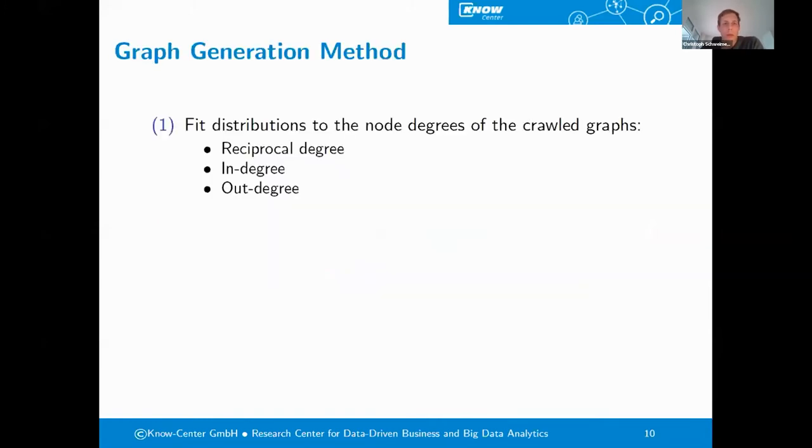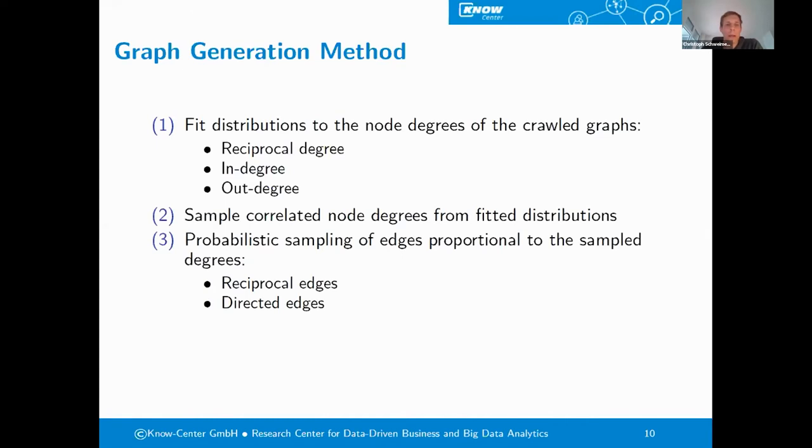Next, I want to go a little bit more into the details of the graph generation approach. We have split it up into four different steps. In the first step, we are fitting distributions to the node degrees of the crawled graphs, looking at the reciprocal degree, the in degree, and the out degree separately. In the second step, we are sampling correlated node degrees from these fitted distributions, and then we are applying a version of the Chung-Lu model, where we then do a probabilistic sampling of the edges proportional to their degrees by looking at the reciprocal edges and the directed edges separately, one after another. And in the end, to achieve a higher clustering coefficient, we apply an edge rewiring procedure.